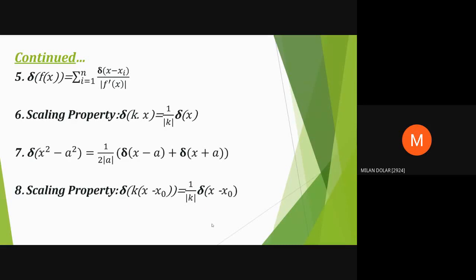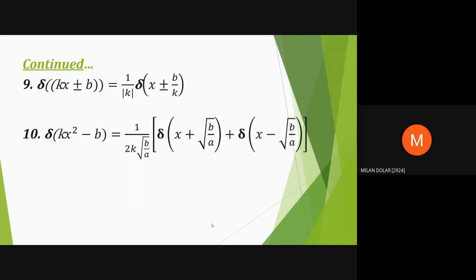Sixth property, scaling property: delta(kx) equals 1 over |k| times delta(x). Seventh property: delta(x squared minus a squared) equals 1 over (2|a|) times [delta(x minus a) plus delta(x plus a)]. Eighth property: delta(k(x minus x-naught)) equals 1 over |k| times delta(x minus x-naught). Ninth property: delta(k(x plus or minus b)) equals 1 over |k| times delta(x plus or minus b/k). Tenth property: delta(ax squared minus b) equals 1 over (2√(b/a)) times [delta(x plus √(a/b)) plus delta(x minus √(a/b))].